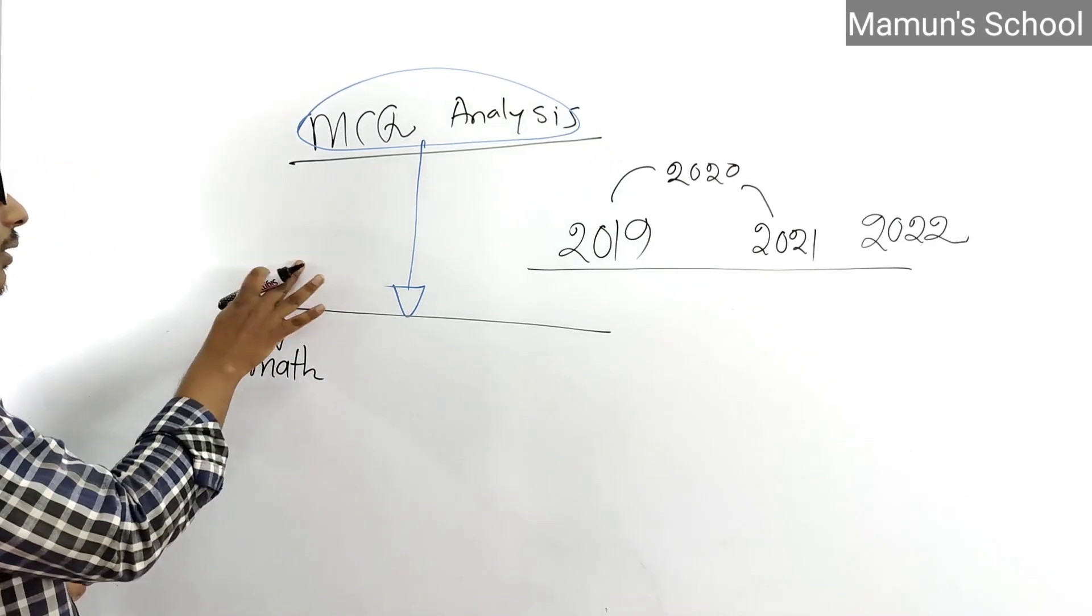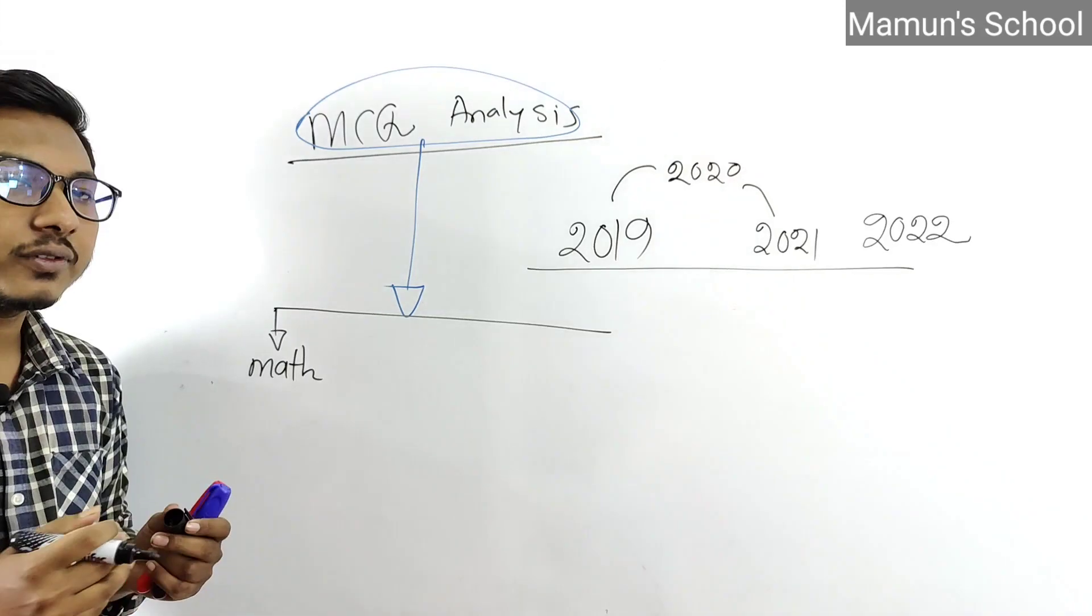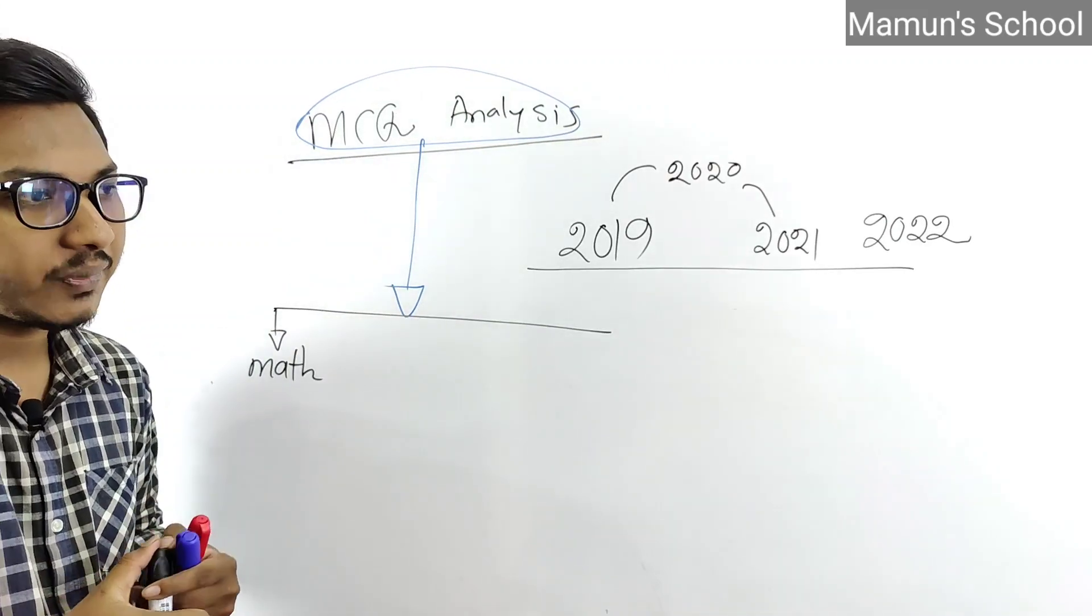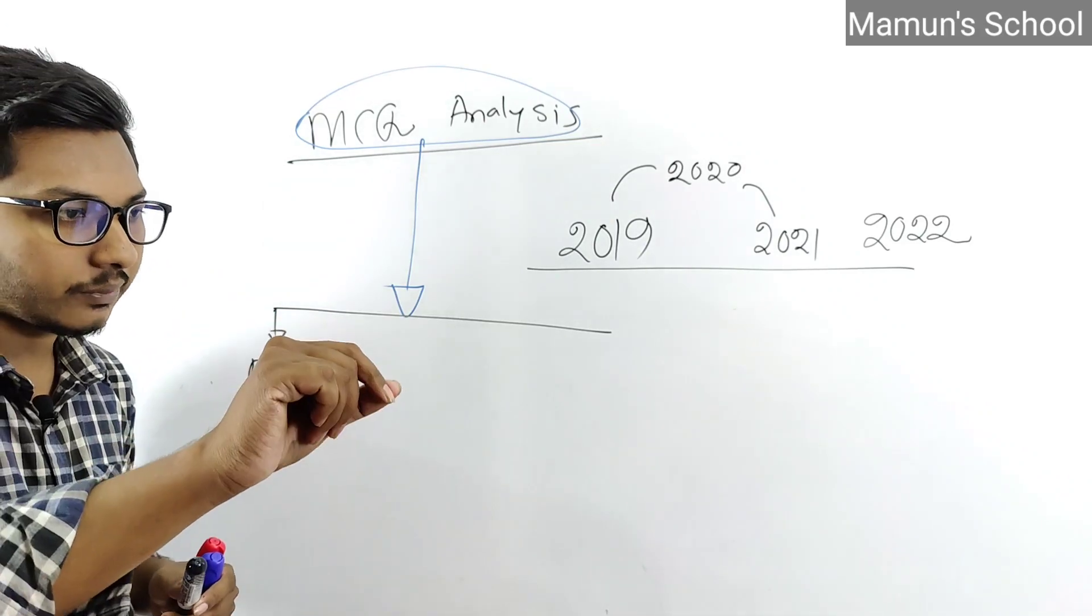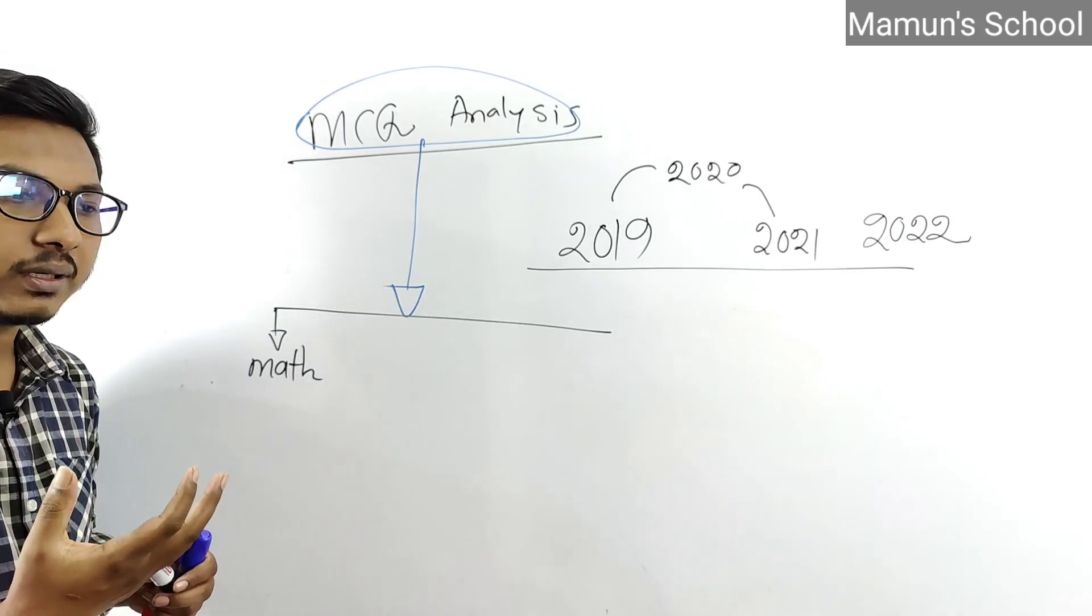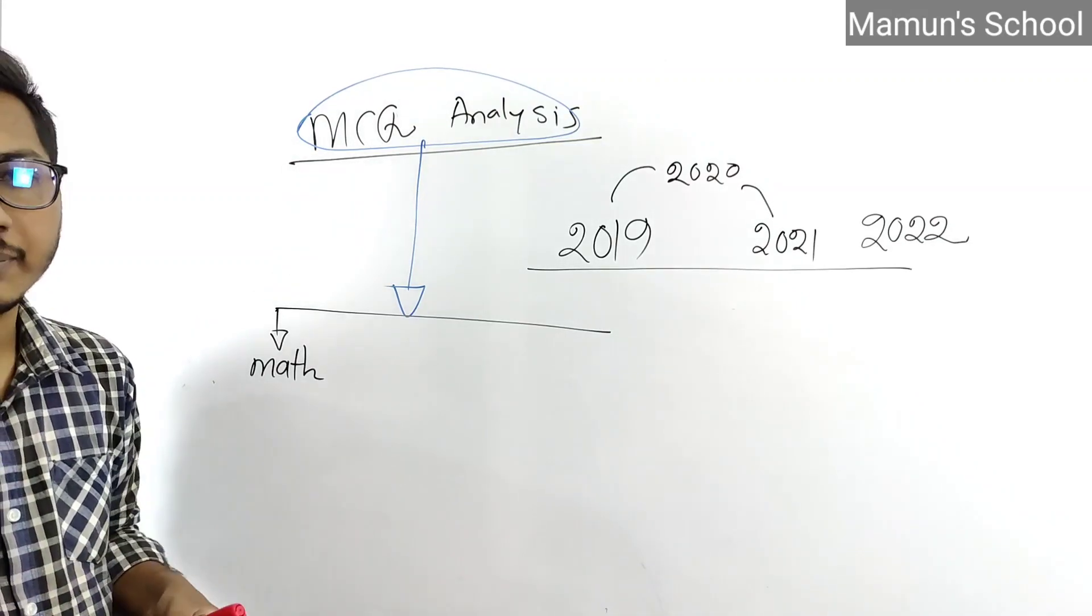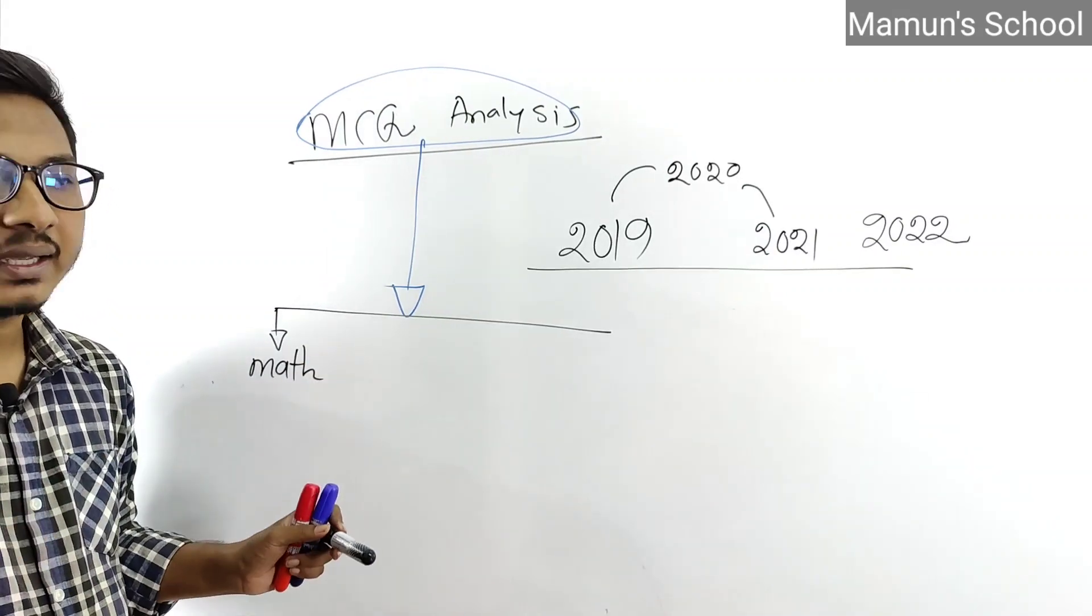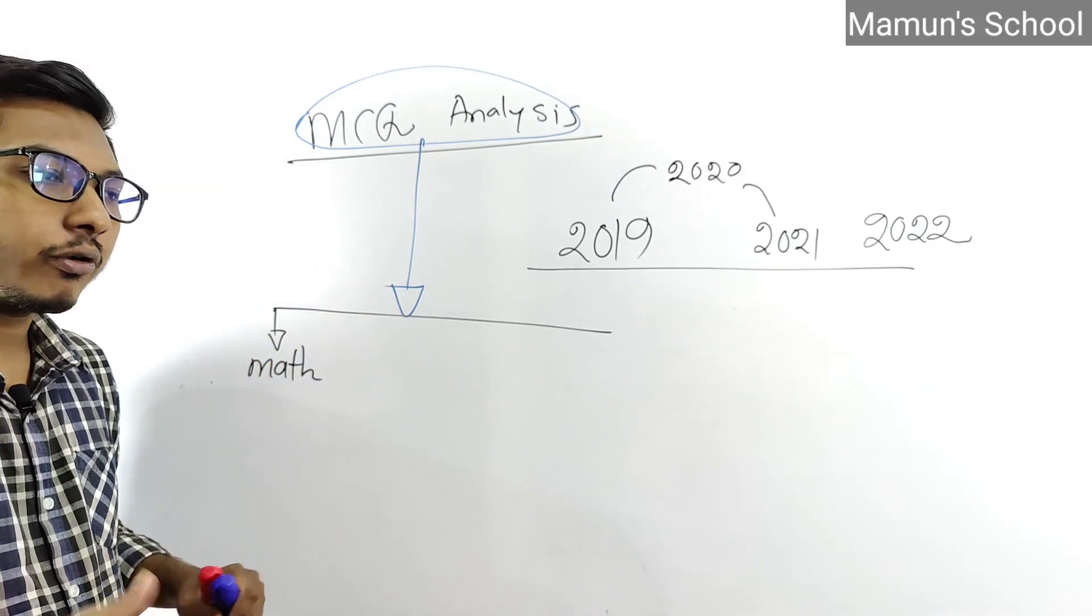When Dhaka University uploads MCQs, I provide detailed corrections within two minutes. This is the key - I focus on basic concepts first. My basics are very clear, then you can learn shortcuts and tricks. Some people only focus on shortcuts without understanding basics, which leads to demotivation.